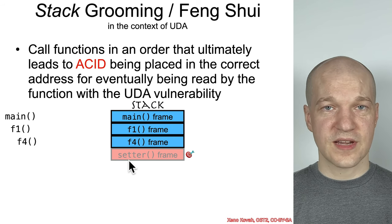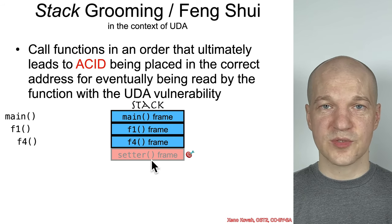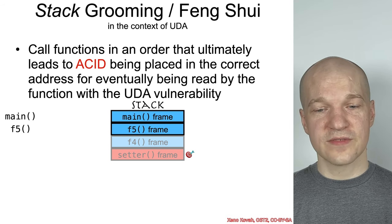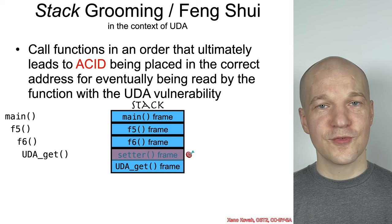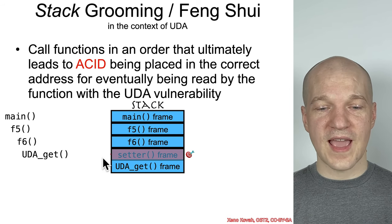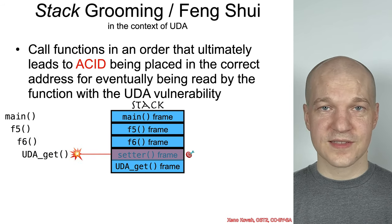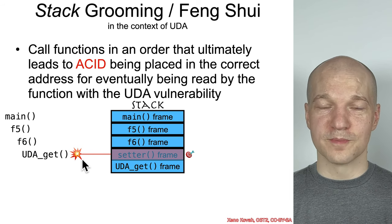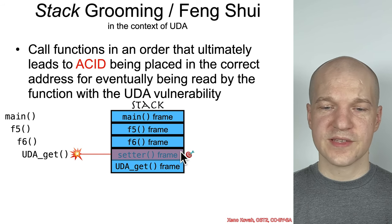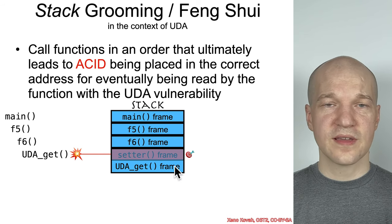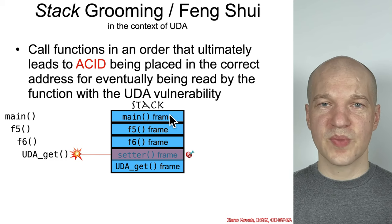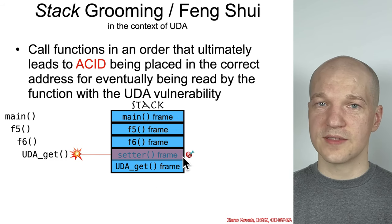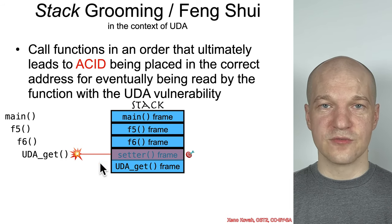Then that function — the setter function — will return, but that data will still be set on the stack. Then F4 returns, and then F1 returns, and then F5 is called, and then F6 is called, and then the OODA get function is accessing uninitialized data that the attacker has successfully filled in with ACID — and that's going to go kaboom. So that's what we saw in the trivial example, but more generally, it's all about how deep in the stack frame the attacker has to go to set the data at the right location for the eventual stack frame that has an OODA access.